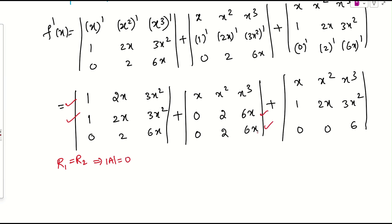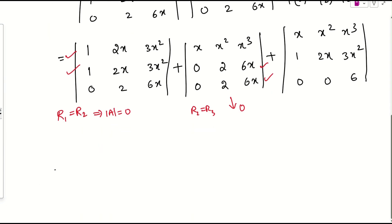Now, if any two rows or columns are identical, the determinant equals 0 — this is a property of determinants. In the first determinant, row 1 equals row 2 (both 1, 2x, 3x squared), so it is 0. In the second determinant, row 2 equals row 3, so it is also 0. You can verify by expanding — you will get 0.